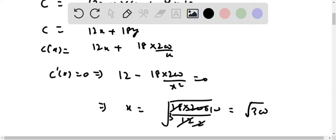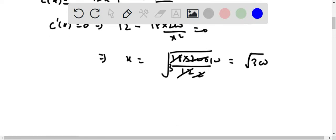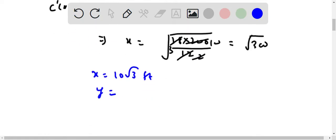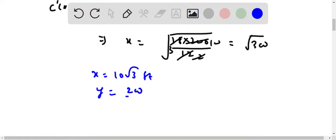200 by 10 under root 3, so this is 20. That means 20 under root 3 by 3 feet. So these are the dimensions. Thanks.